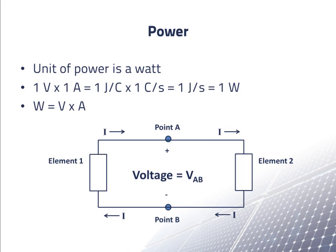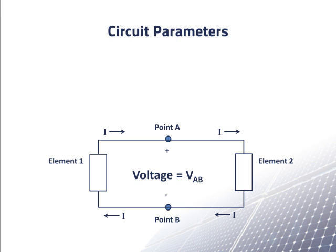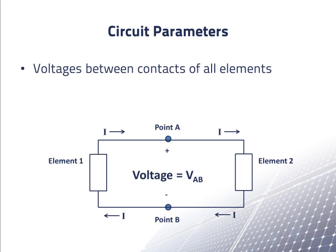From the perspective of a circuit, the important parameters are the voltages between its connection points and the currents at its connection points. In other words, voltages are measured across elements, currents are measured through conductors or into and out of elements.